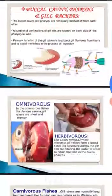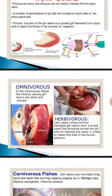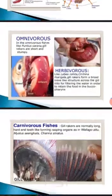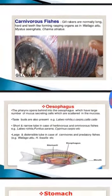In different categories of fishes, gill rakers vary. In omnivorous fishes such as Puntius serana, the gill rakers are short and stumpy. In herbivorous fishes like Labeo rohita and Cirrhinus mrigala, the gill rakers form broad sieve-like structures across the gill slits, filtering water to retain food in the buccopharyngeal apparatus. In carnivorous fishes the gill rakers are long and tooth-like, forming rasping organs, as in Wallago attu, Mystus singhala, and Channa striata.